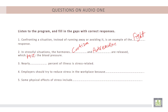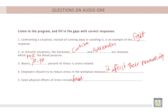Number three: nearly 70 to 90% of illness is stress-related. Number four: employers should try to reduce stress in the workplace because it affects their productivity. Number five: some physical effects of stress include headache and depression.